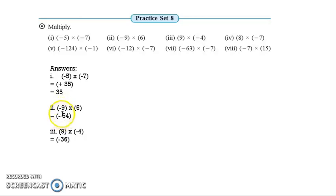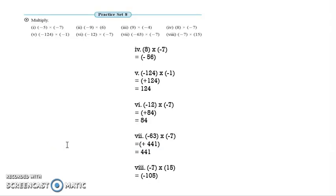Question 2: negative 9 multiplied by 6. One negative integer and one positive integer — the answer will have a negative sign. Nine multiplied by six is 54, so the answer is negative 54. Question 3: 9 multiplied by minus 4. Positive multiplied by negative — the answer is negative 36. Question 4: 8 multiplied by minus 7. Positive multiplied by negative — negative 56 is the answer.